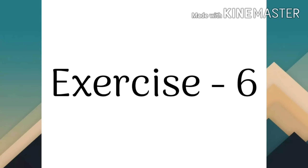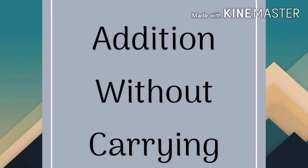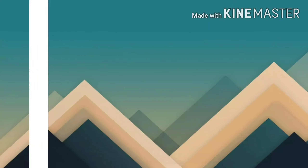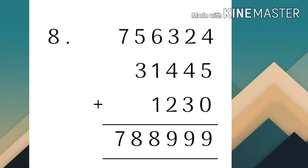अब हम आ जाते हैं आपके maths book के exercises पे। हम पहले exercise 6 करना start करते हैं, जो कि addition without carrying पर based है - simple type of addition। हम ones के place से addition करना start करेंगे। Question number 8: 4 plus 5 = 9.